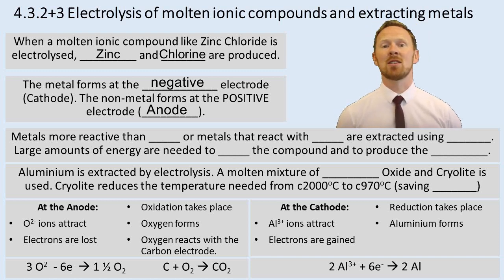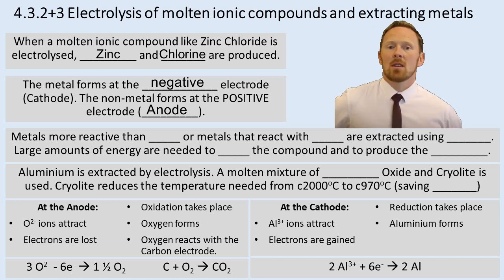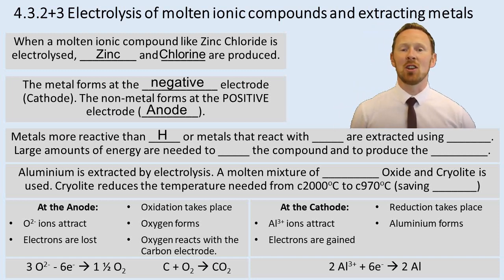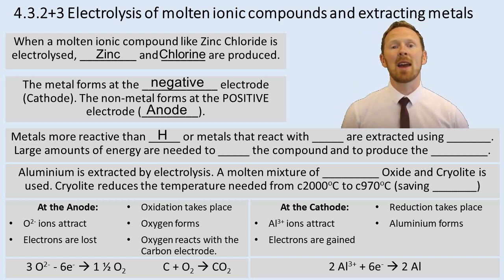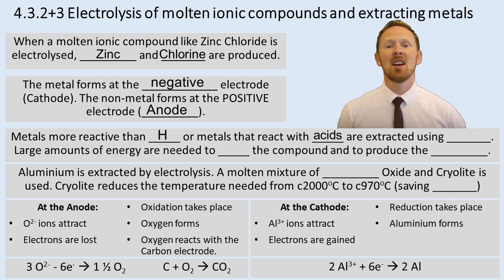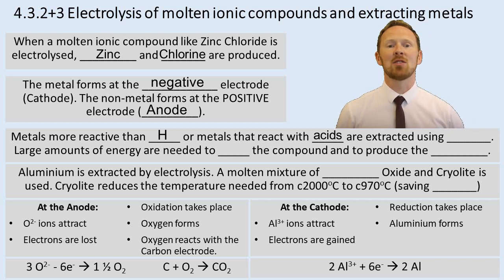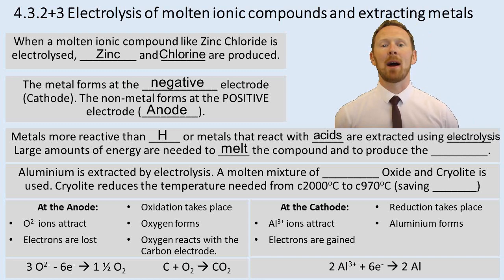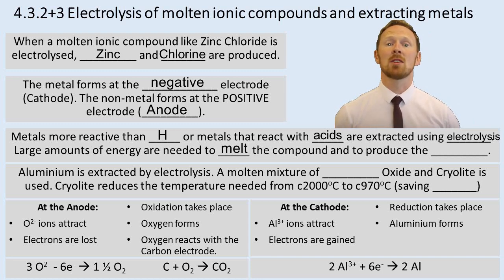The non-metal ions are negative, so they're attracted to the positive electrode. Metals more reactive than hydrogen, or metals that react with acids, are extracted using electrolysis. During electrolysis, large amounts of energy are needed to melt the compound and to produce the current.